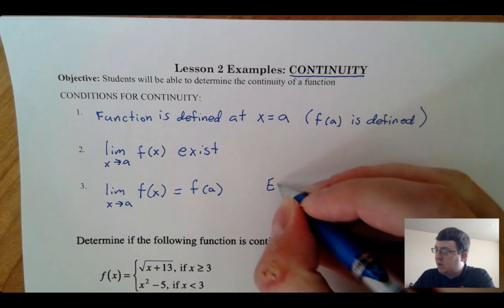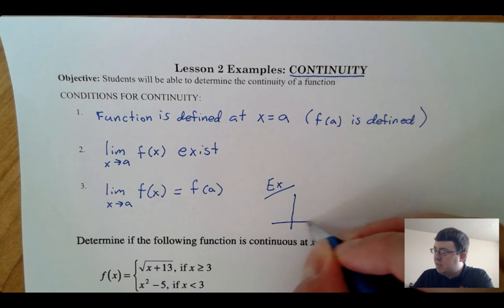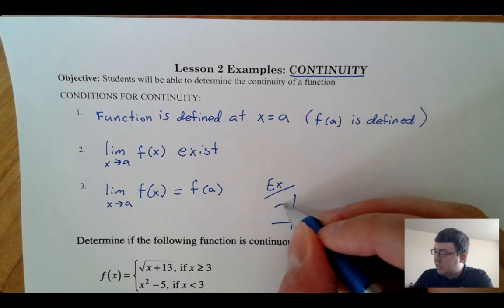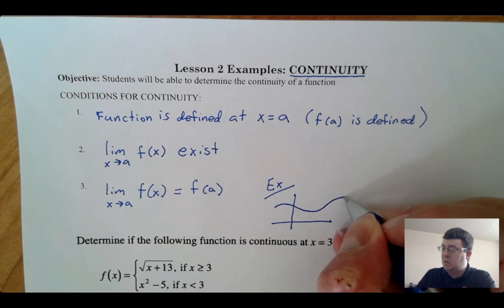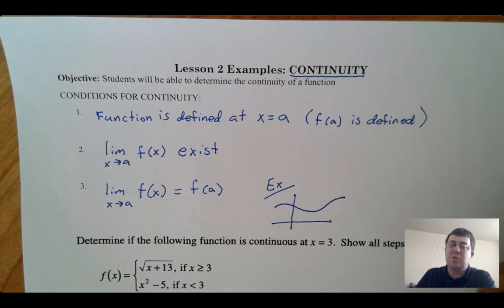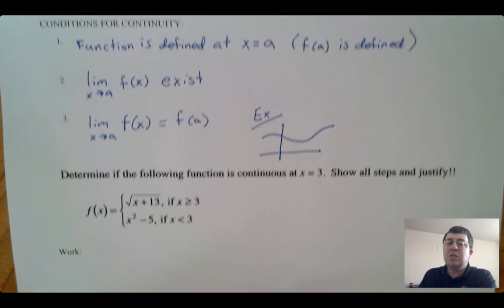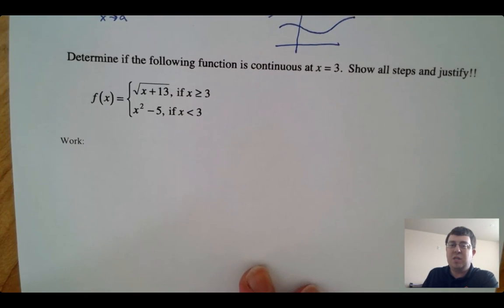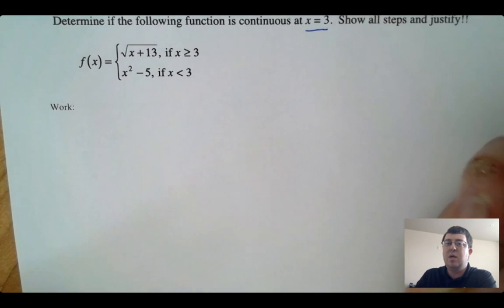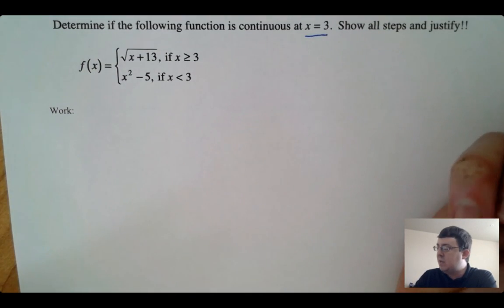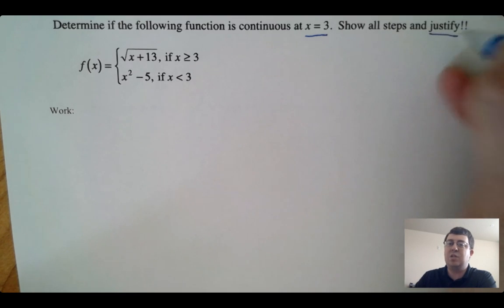Graphically, continuity means I can draw the function without picking up my pencil — a nice smooth continuous curve with no holes, jumps, or asymptotes. But we don't often have a graph, so let's look at it algebraically. We want to figure out if this function is continuous at x equals three. We want to show all of our steps and be sure to write a justification statement at the end.